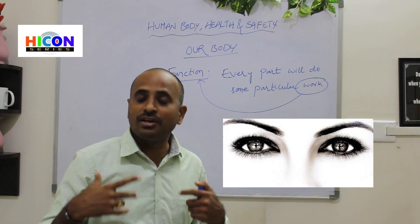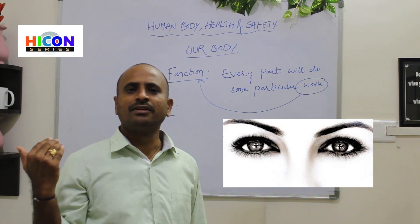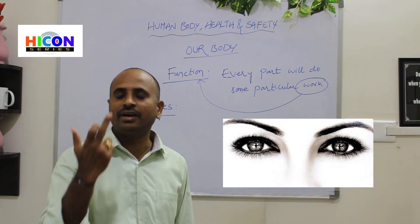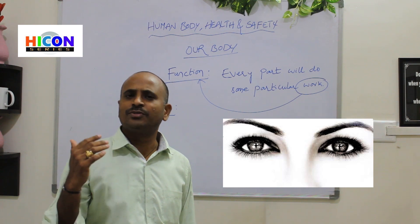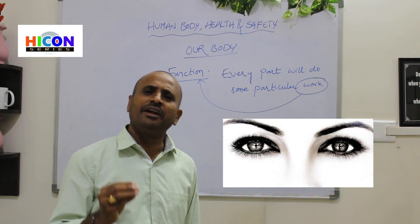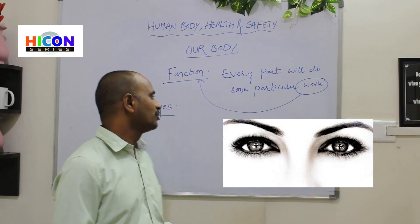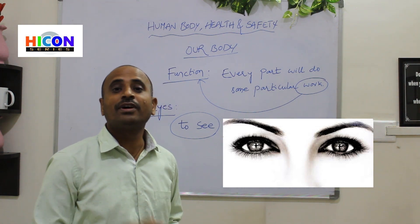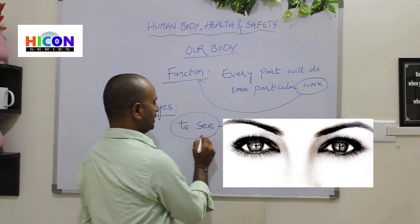That means we are able to observe different types of trees, animals, vehicles, and everything around us. So everything in our world and everything in our surroundings will be observed by our eyes only. Eyes are used to observe various things — trees, plants, animals, and each and everything. Both living things and non-living things can be observed with the help of our eyes. The function of our eyes is to see.